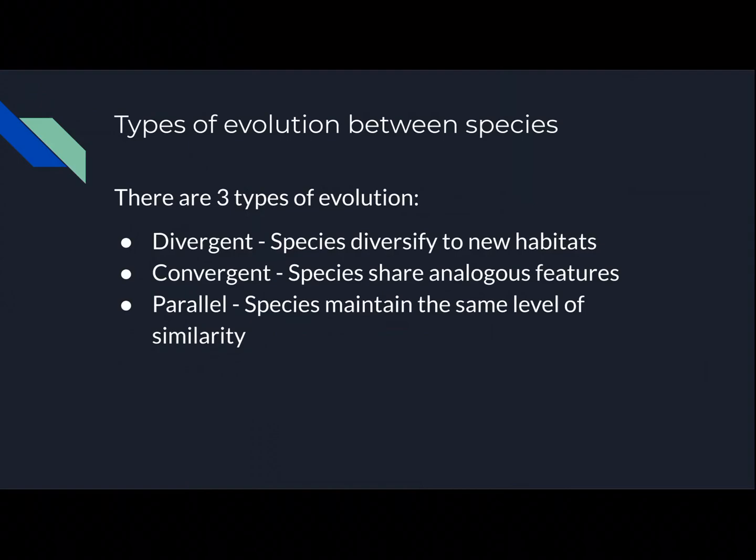Convergent. In convergent evolution, species share analogous features, which are features that are similar in function but differ between species. For example, bats and birds share an analogous structure in wings. Both species have wings, but they are not the same, and the species do not share a common ancestor.